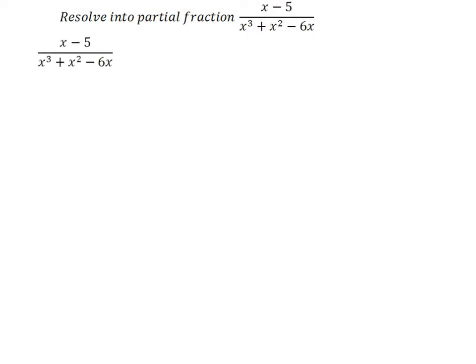The degree of the numerator is 1. The degree of the denominator is 3. So this is a proper fraction. Now we factor the denominator: x is common, giving x(x² + x - 6), and the denominator has x as a common factor.